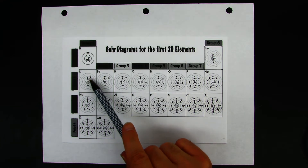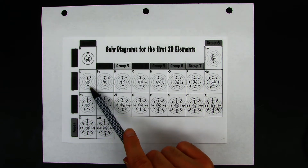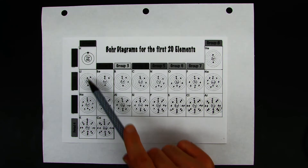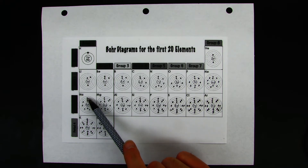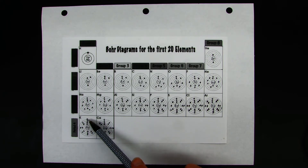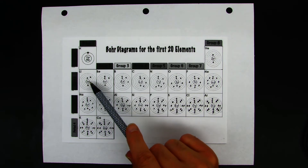In lithium you can see that the second energy level has an electron in it, so the outermost shell is the second energy level, and again it only has one electron. For sodium it has three energy levels, and the last energy level — the third one — only has one electron. And for potassium in period four, it has one electron in the fourth energy level. So the outermost shell for each of these only has one electron.